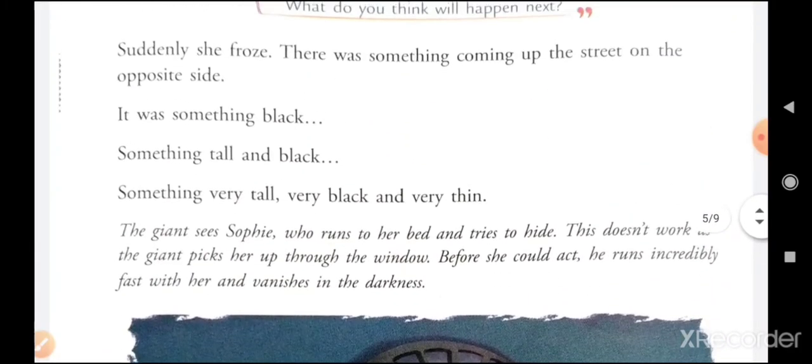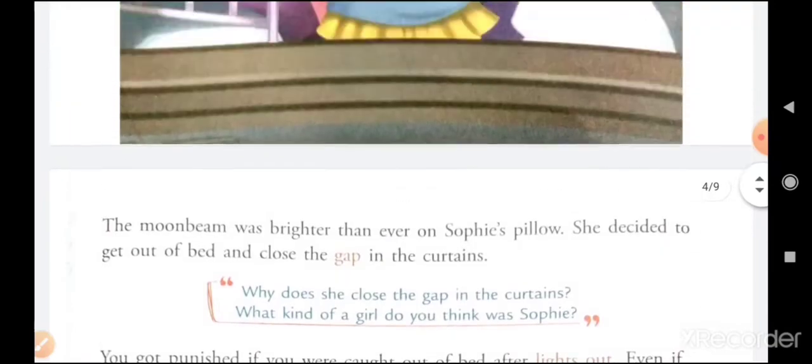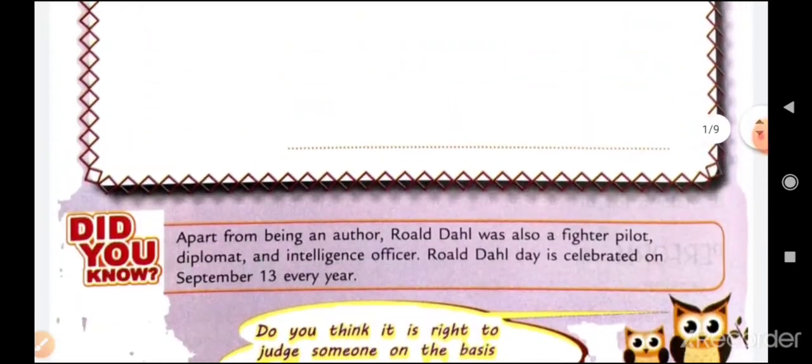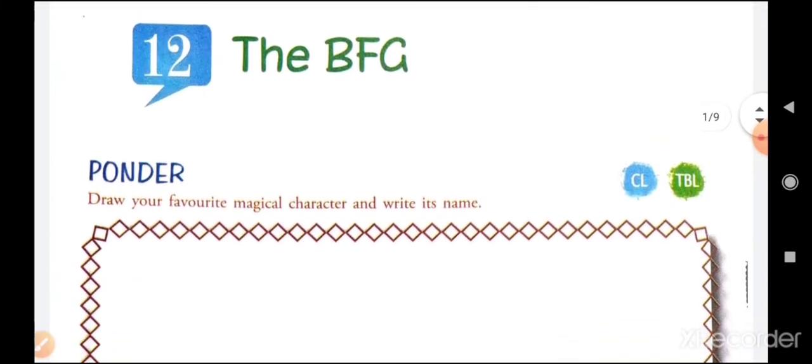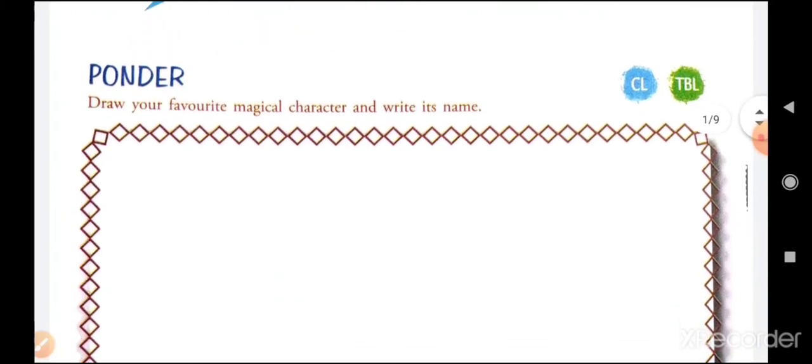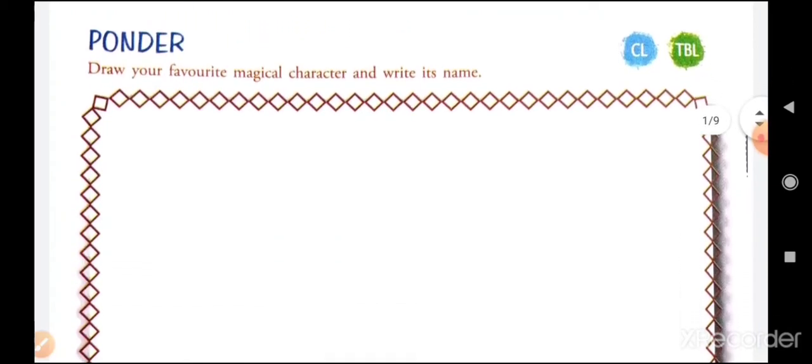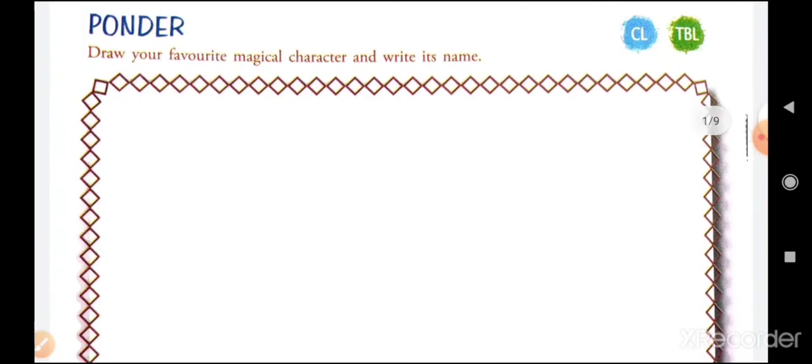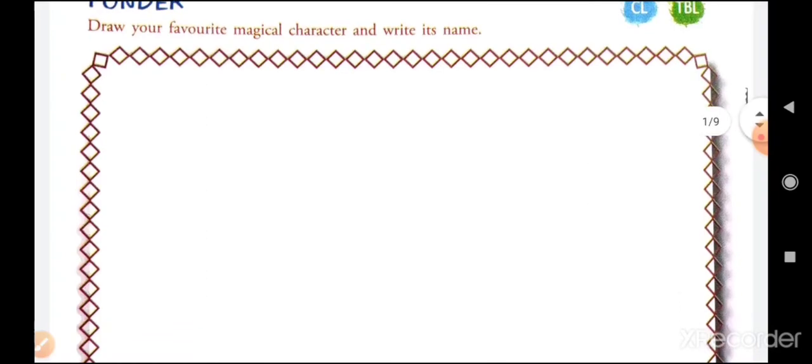The title of the story, Chapter number 12 or lesson number 12, BFG. She ponder. Draw your favorite magical character and write its name. You can draw any magical character which you like, your favorite, and you have to write its name.